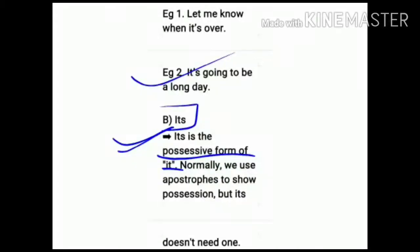Its is written without apostrophe. When we show possessive form of it, no apostrophe is used. We simply write ITS—no apostrophe is needed.